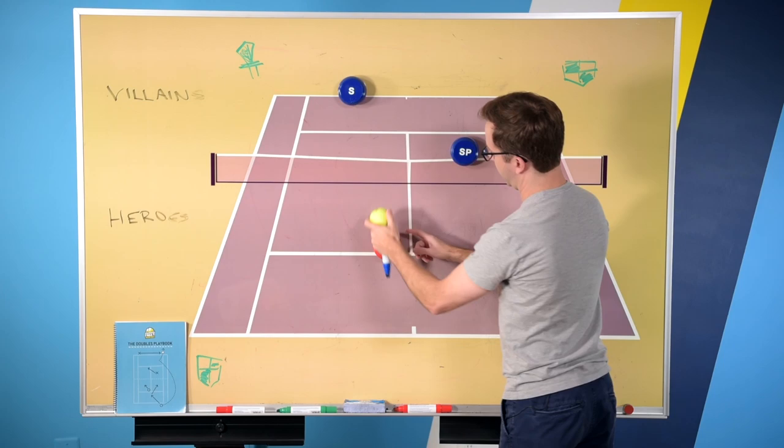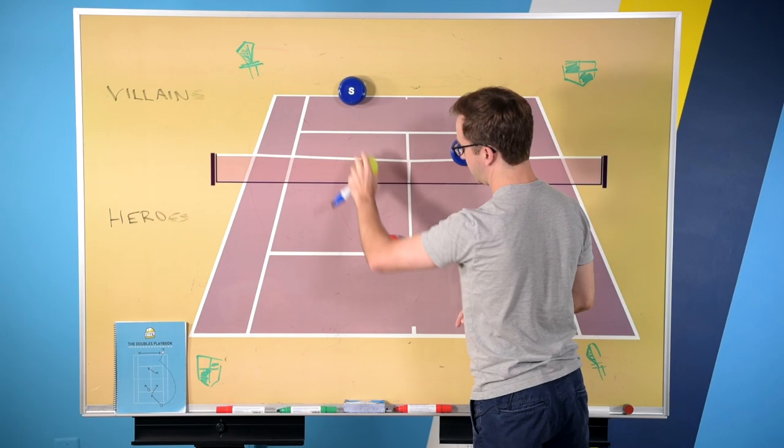you would hit a return, and when the return's coming over here, so basically the returner's partner is going to hold position until the ball gets by the server's partner.